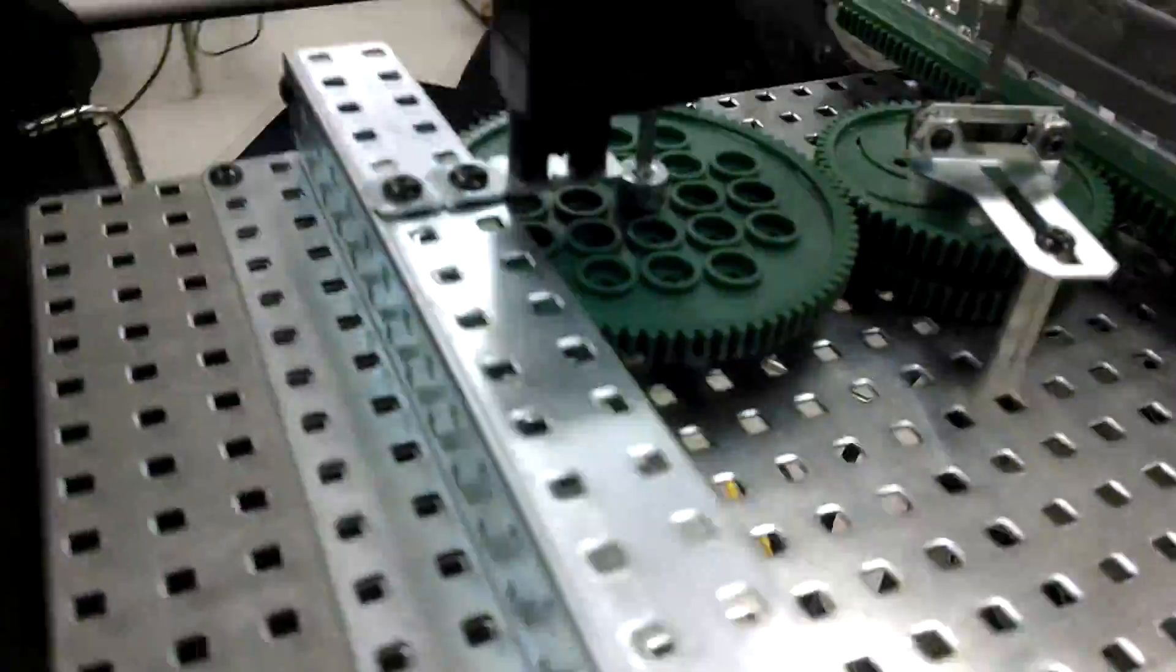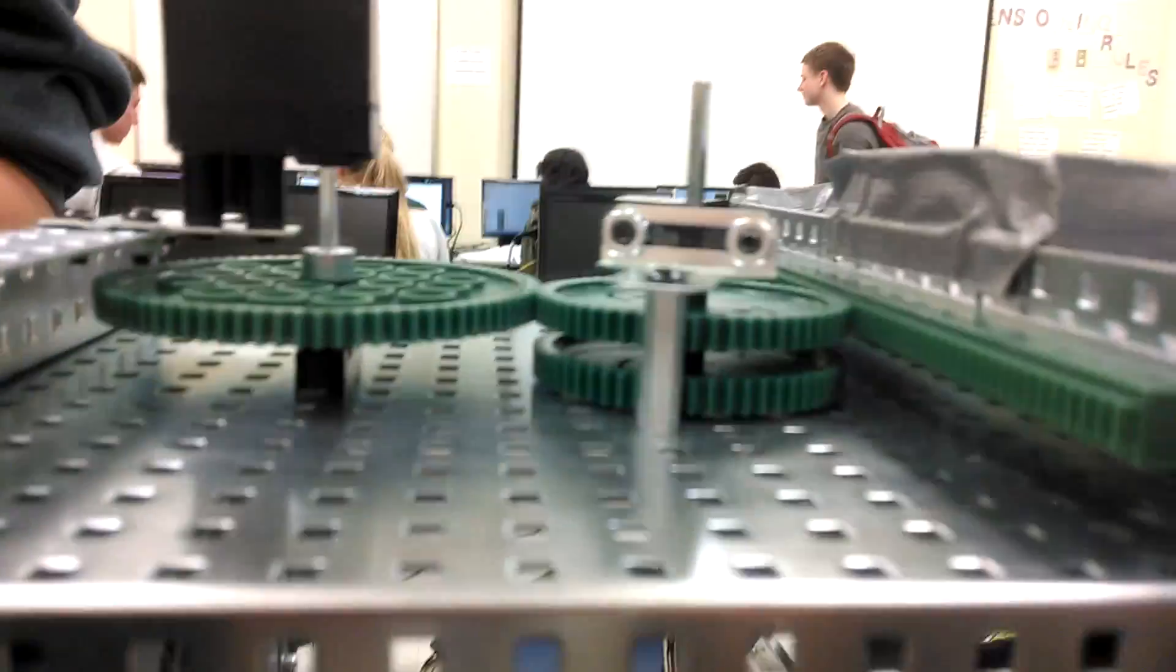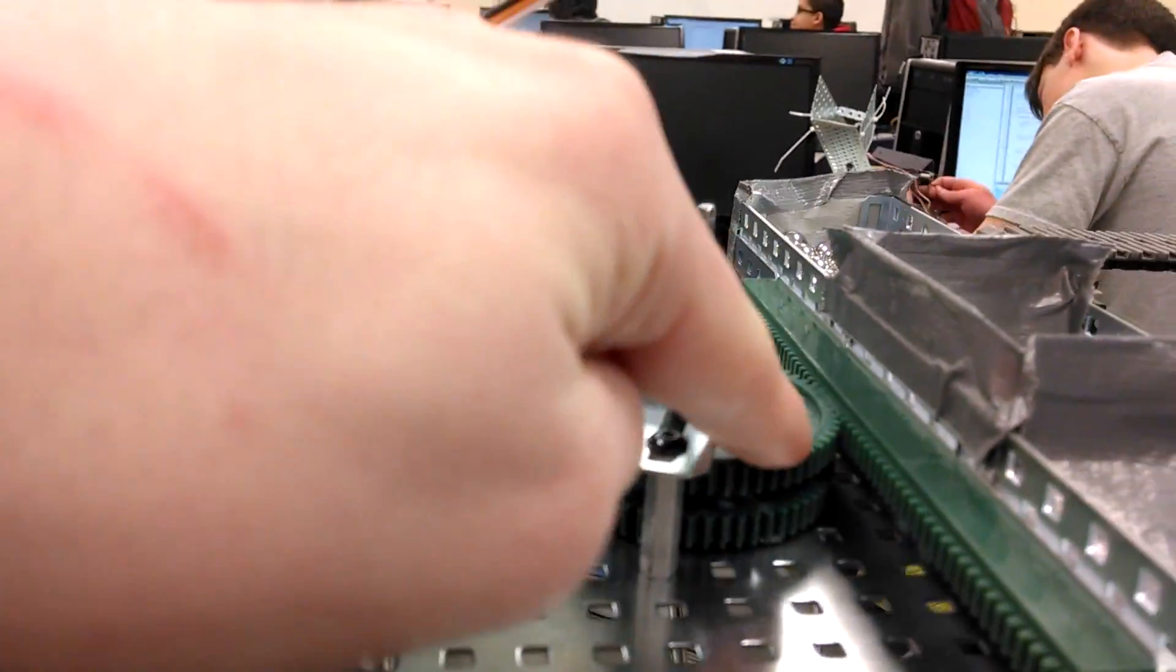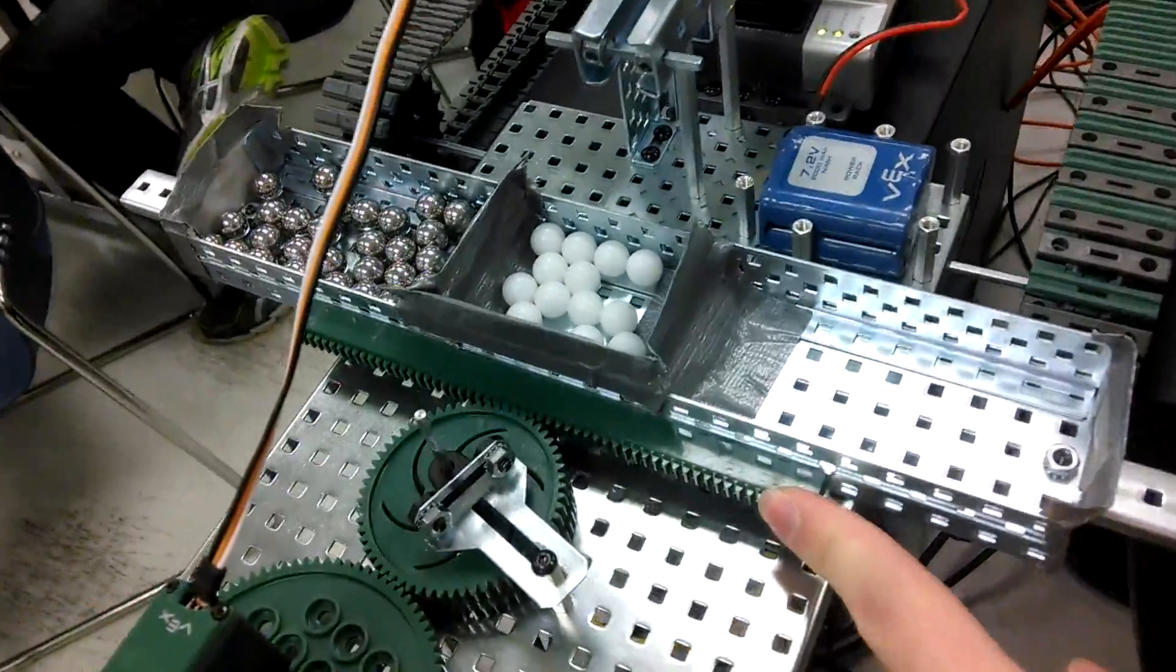So this is our robot. As you can see we have the gear system, the servo that turns this gear, spins, turns this, and drives this little, I don't know what you want to call it, that catches all of our marbles.